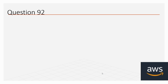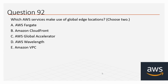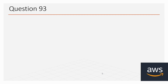Question number 92: Which AWS services make use of global edge locations? Choose two. Options: A. AWS Fargate, B. Amazon CloudFront, C. AWS Global Accelerator, D. AWS Wavelength, E. Amazon VPC. The correct options are B and C: Amazon CloudFront and AWS Global Accelerator.